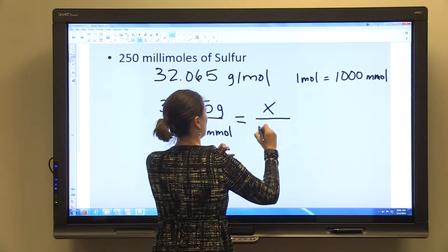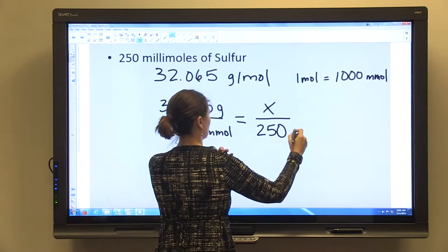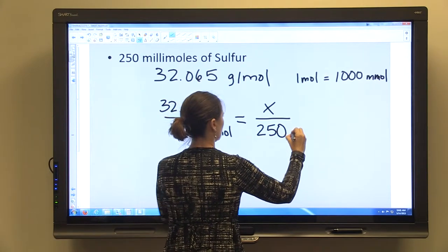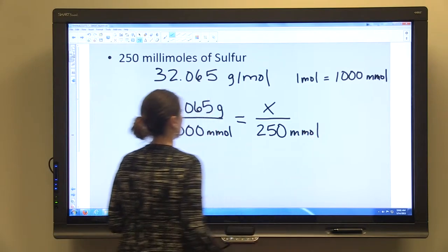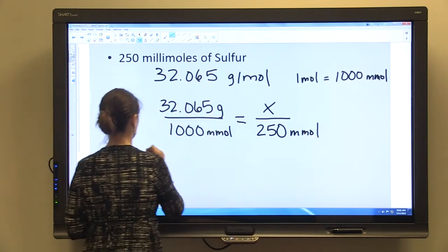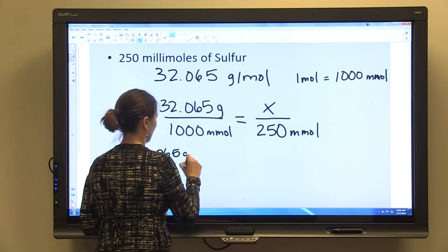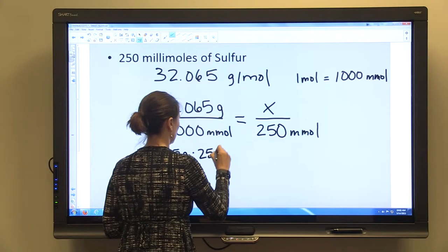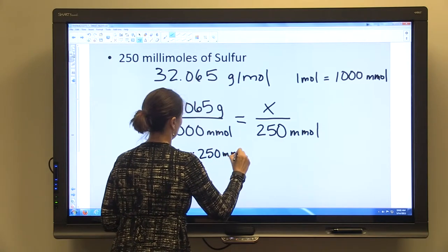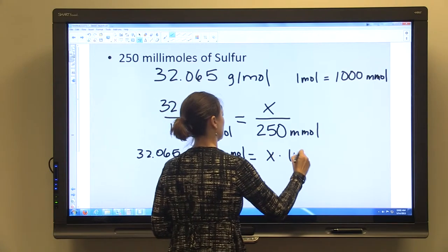And so we'll solve this proportion by cross-multiplying 32.065 grams times 250 millimoles equals x times 1,000 millimoles.